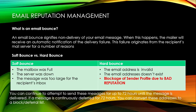When a bounce happens, the mailer will receive an automatic notification of a delivery failure. This failure originates from the recipient mail server for a number of reasons. Whenever you send any email, it might be possible that you will get a bounce message stating your email is unable to reach your audience, and you get certain emails back to your inbox with some technical language that can be difficult to decipher. That is what email bounce is all about.